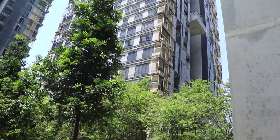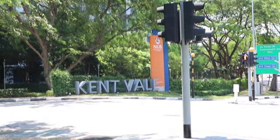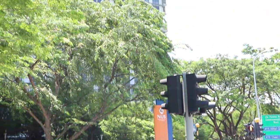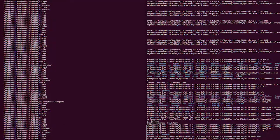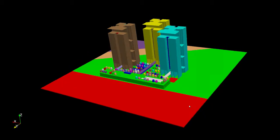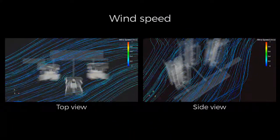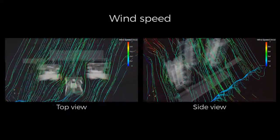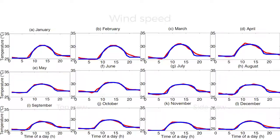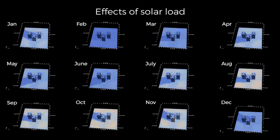A case study of Cantwell is carried out to illustrate the tool's capabilities. Cantwell is the housing facility of National University of Singapore for its faculty members. By including major heat sources and sinks in the model domain of Cantwell buildings, ventilation is first simulated around the buildings, and then solar radiation and air temperature on a typical day of each month are validated against observed data. The comparison results show the performance of the developed tool is quite good.